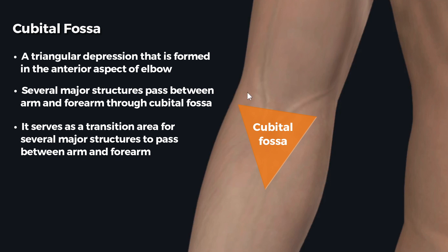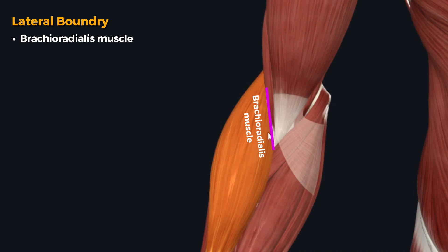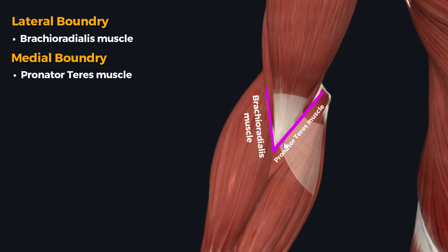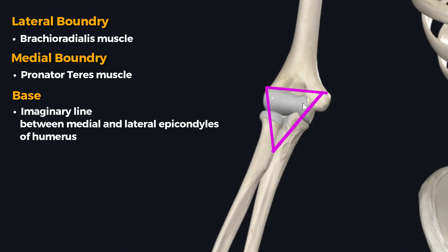First we will discuss the boundaries of the cubital fossa. The lateral boundary is formed by the medial border of the brachioradialis muscle, while the medial boundary is formed by the lateral border of the pronator teres muscle. The apex of this triangular depression is formed where these two muscles meet inferiorly. The base is formed by an imaginary line drawn between the medial and lateral epicondyles of the humerus.